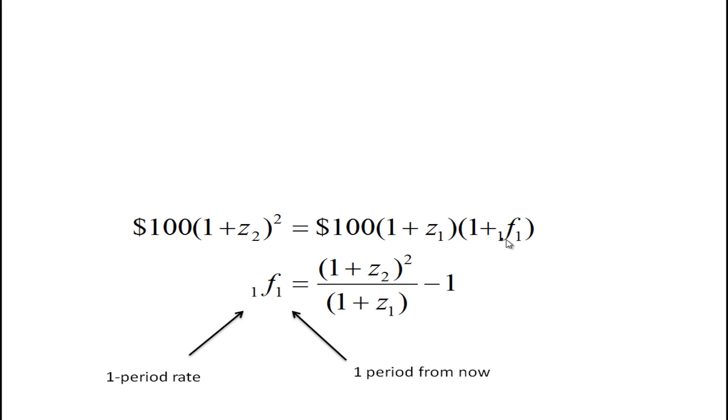You're going to get an interest rate of z1 for the first period and then you're going to get this one plus, and I've put in some subscripts here, 1f1, and what this means is that this first one means it's a 1 period rate so in this case 6 months and this is going to be 1 year from now. And if we just do some algebra we can solve for this and we find that the forward rate 1 period from now will be the 1 plus the 2 year spot rate squared divided by 1 plus the 1 year spot rate. And then we subtract 1 from it.